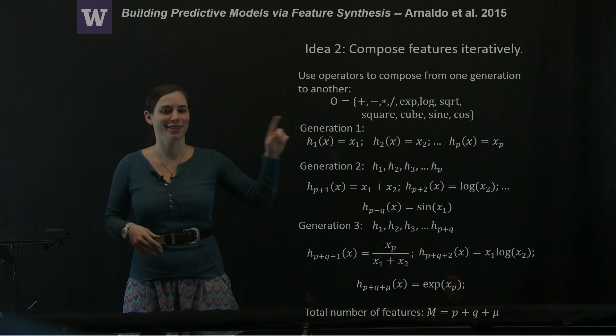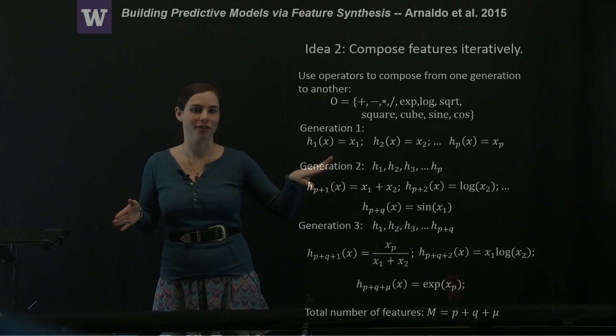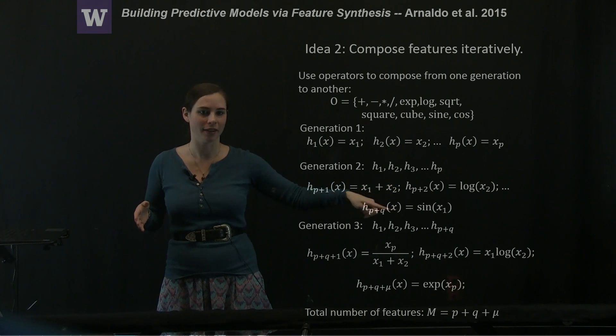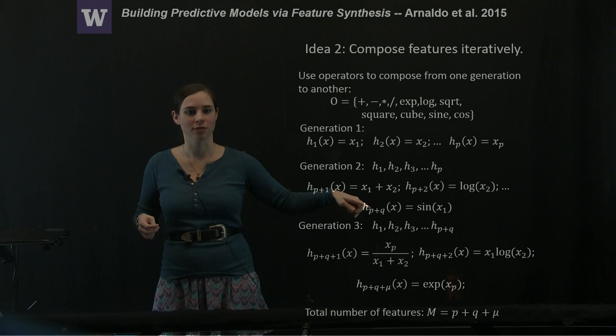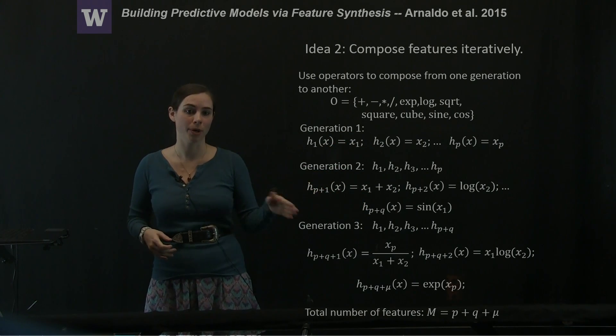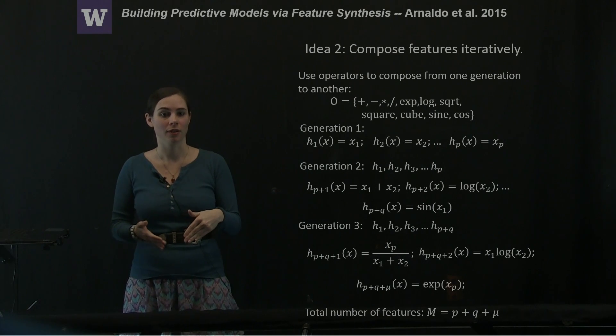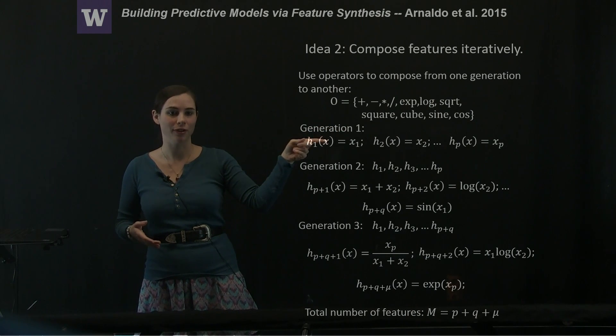In order to get to the third generation of features, there's going to be some sort of evaluation on this generation of features. You're going to end up with q of these new features. And we're keeping this original generation of features. Because if you now want to compose a new generation of features, you want your operators to be able to act on these original linear variables.